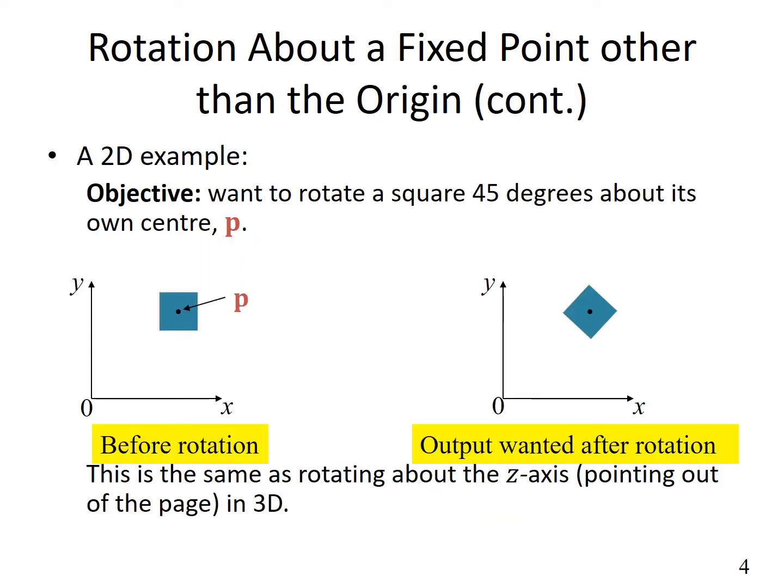The next four slides, up to slide seven, basically further explain what I just mentioned—rotation about an arbitrary point other than the origin. If you have understood that fully, you can skip up to slide seven and then go to slide eight.